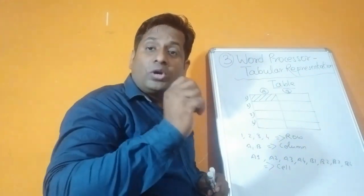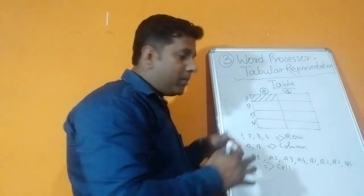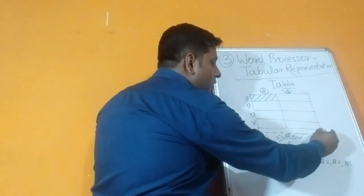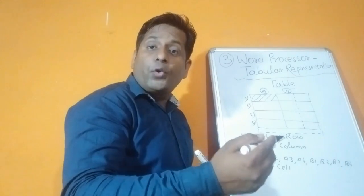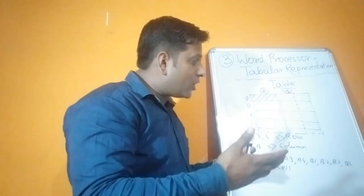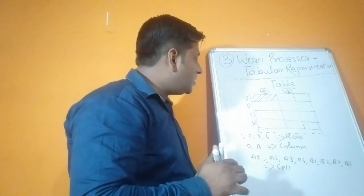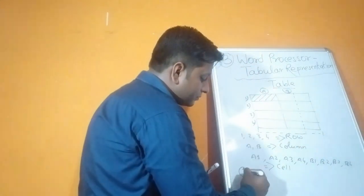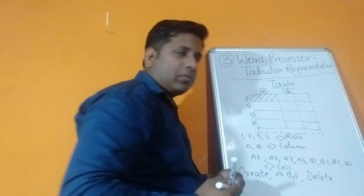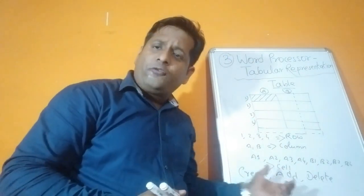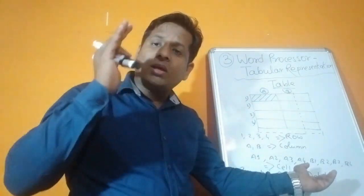In this chapter, there are a few very important things we should know. First, how to create a table. Second, how to add rows - maybe you need more rows - you can add them. Or maybe you need more columns - you can add those too. And third, if there is an extra row or column, you should know how to delete it. So we need to learn how to create, add, and delete rows and columns.